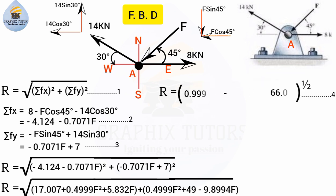So R = (0.9998F² − 4.0674F + 66.007)^(1/2), where the 1/2 power represents the square root. To solve this type of equation, we need to find the derivative first — we differentiate to reduce the equation. This uses the chain rule from calculus, since it is a function of a function. We differentiate R with respect to F, and since R is at a minimum, dR/dF = 0.